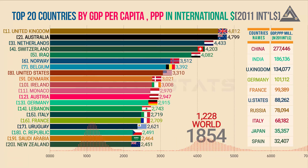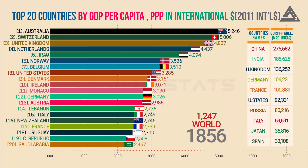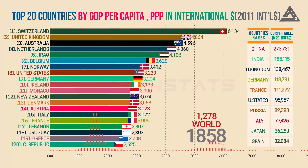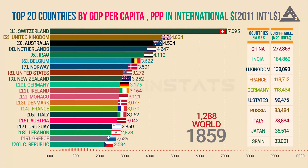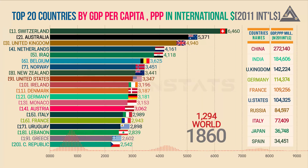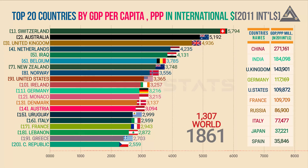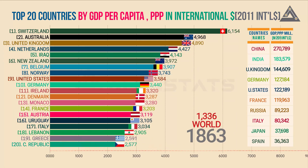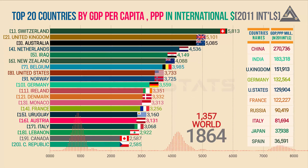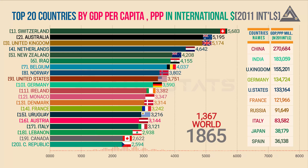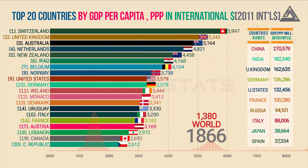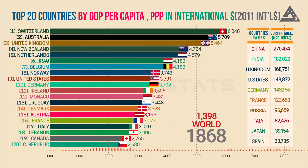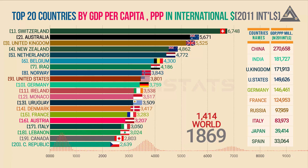Almost all that ordinary people used and consumed in the 17th century would have been very familiar to people living a thousand or even a couple of thousand years earlier. Average incomes in England between the year 1270 and 1650 were £1,051 when measured in today's prices.